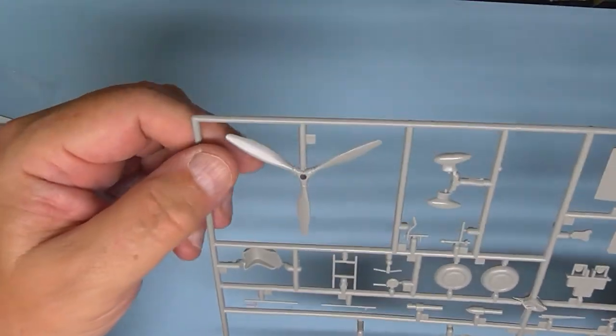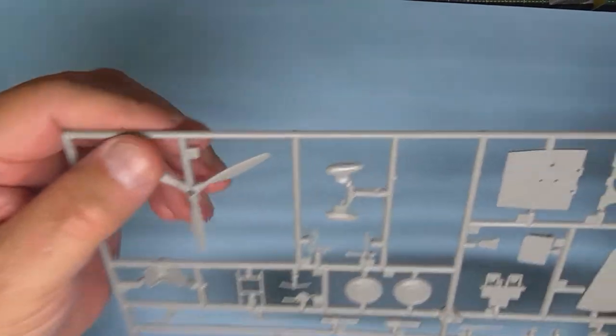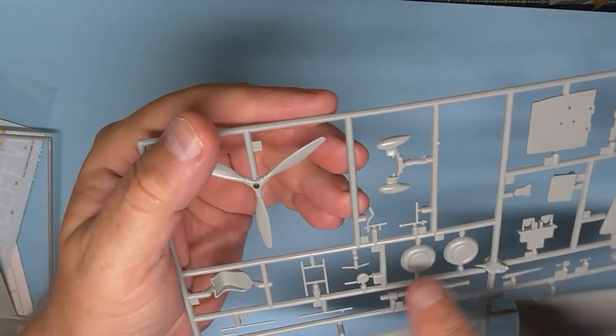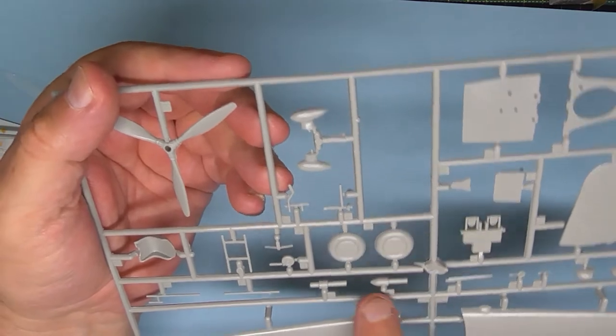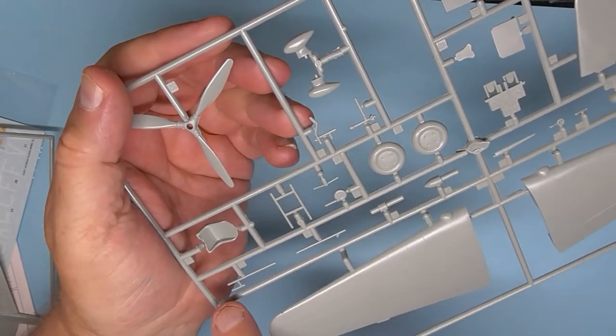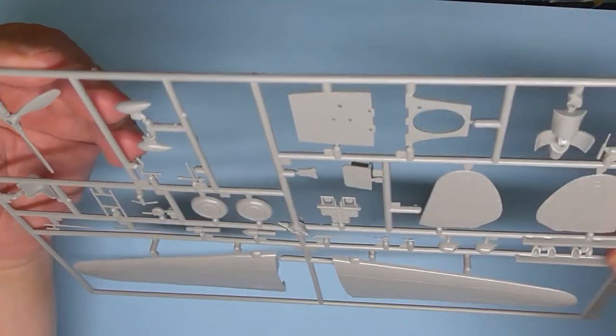Get the next bag out with the two big sprues. So on this sprue we've got the propeller, very nice. Aerial cover, wheels, pilot seat, probably something to do with the spinner then. Two different types of propeller blades. I don't know what they are.